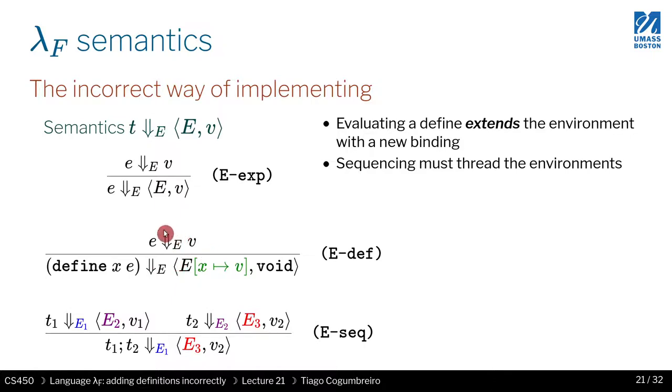And now we want to communicate a change in the environment. So what we do, we update the environment, and we assign X to V, or V to X, sorry. And what is the result of evaluating define? Well, it has to be void. That's why you have on the right-hand side a void.